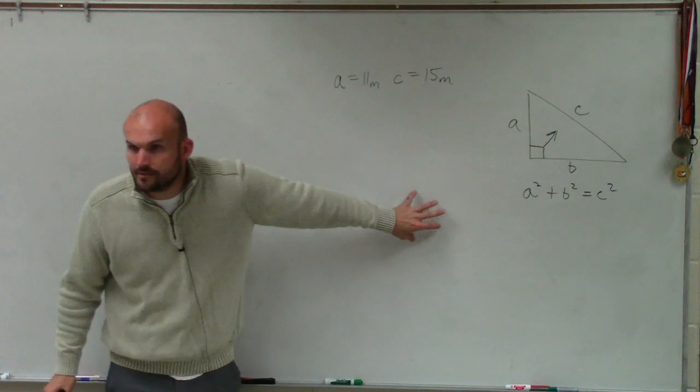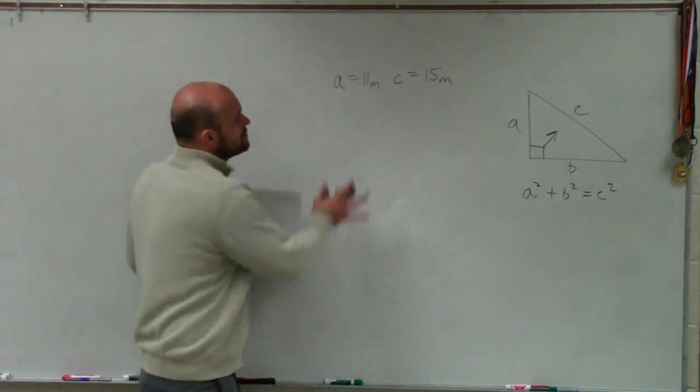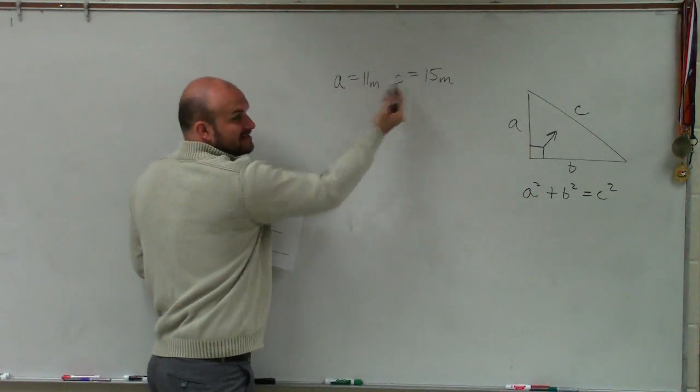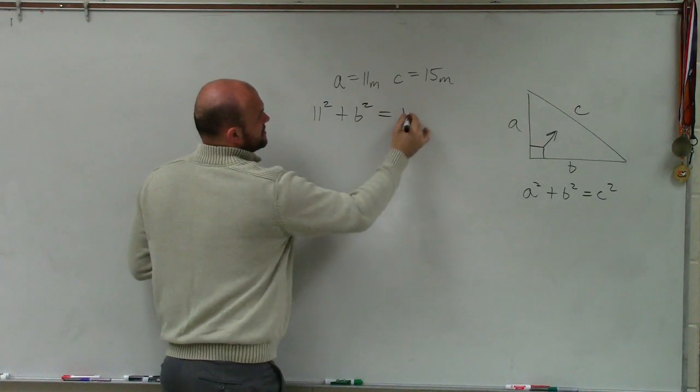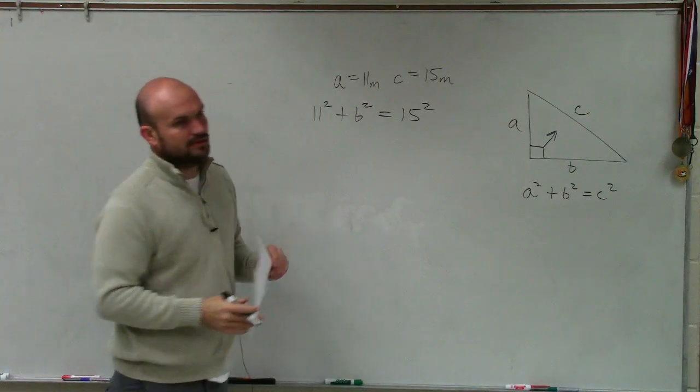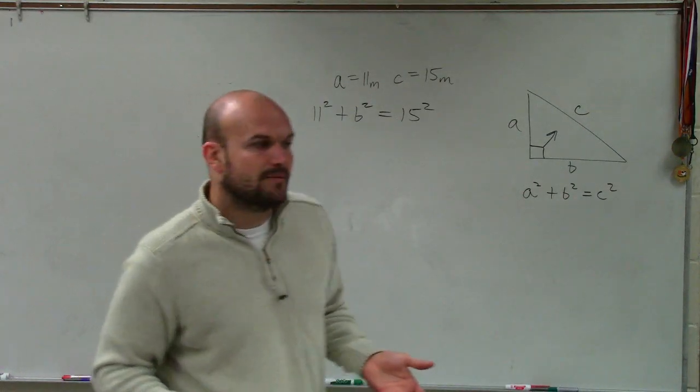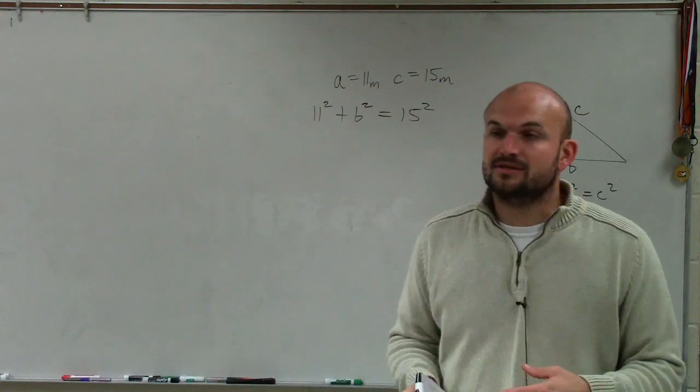Does that make sense? All right. OK, so now, well, they provide us, they say that C is our hypotenuse. So we can say 11 squared plus B squared equals 15 squared. All right? And again, what we're going to be trying to do is, again, solve this. But we want to find this in our radical form.